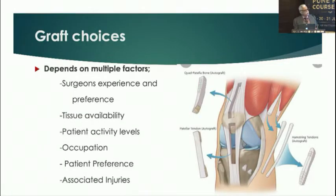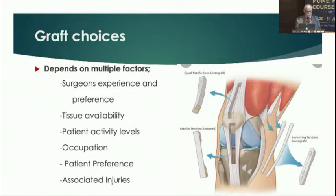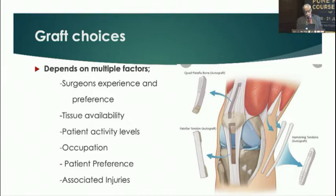Graft choices depend on many factors, and the most important is the surgeon's experience and preference. Once a surgeon experiences success with a particular graft, he keeps using it. Patient activity level is also key — especially if it's a high-level athlete, surgeons prefer the bone patellar tendon.